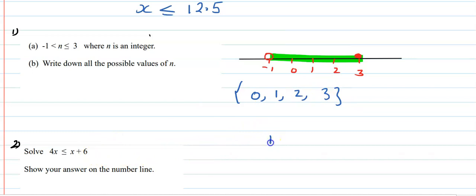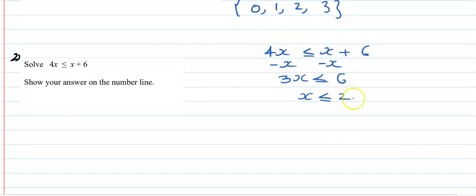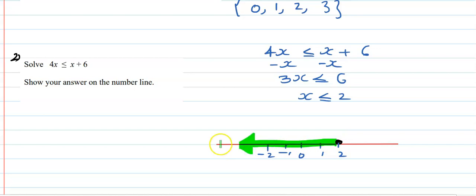Now, 4x less than or equal to x plus 6. Subtract x from both sides: 3x less than or equal to 6. Divide by 3 both sides: x less than or equal to 2. We can draw it on a number line — 0, 1, 2, minus 1, minus 2. Point 2 is included, so make a dark circle, and all values less than 2 keep going this way.